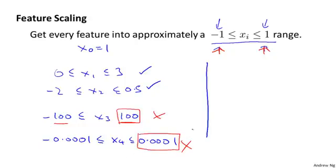So you want the range of values, it can be a bit bigger than plus 1, a bit smaller than plus 1, but just not much bigger like plus 100 and not too much smaller like 0.001. Different people have different rules of thumb. But the one that I use is that if a feature takes on a range of values from minus 3 to plus 3, I usually think that should be just fine. But if it takes on much larger values, I might start to worry. And if it takes on values from minus 1/3 to 1/3, I think that's fine too. The take home message is don't worry if your features are not exactly on the same scale. But so long as they're all close enough to this, gradient descent should work okay.